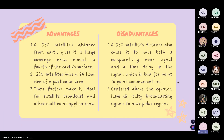The advantages of GEO: first, a GEO satellite's distance from Earth gives it a large coverage area, almost a fourth of the Earth's surface. Second, GEO satellites have a 24-hour view of a particular area. Third, these factors make it ideal for satellite broadcasts and other multipoint applications.